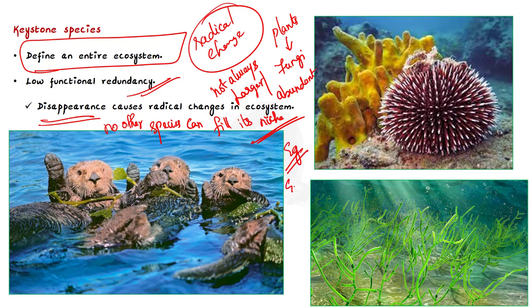For example, in African savannas, the elephants are a keystone species. Elephants control the tree population, which makes the grasses thrive and sustain grazing.